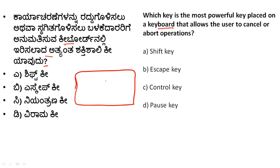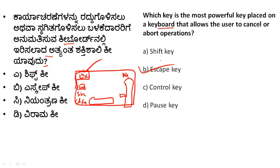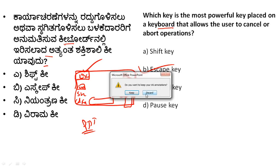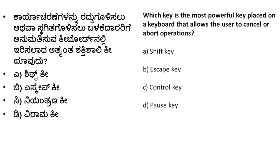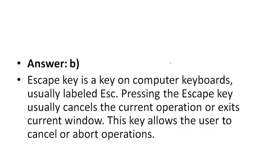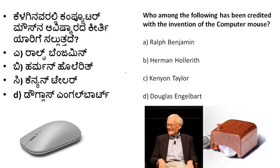If you want to cancel or close, which key do you press? Options: Space bar, Enter, Shift, Control, Function, Caps Lock. The correct answer is Escape key. This is called the Escape key. Very important question - Escape key is the right answer.